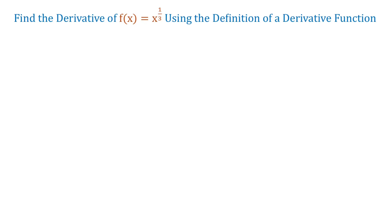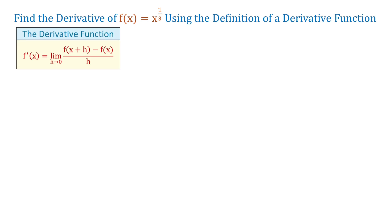Hello. In this video, we will see how to find the derivative of f of x equals x to the one-third using the definition of the derivative function. The definition tells us that f prime of x equals the limit of f of x plus h minus f of x over h as h approaches 0.